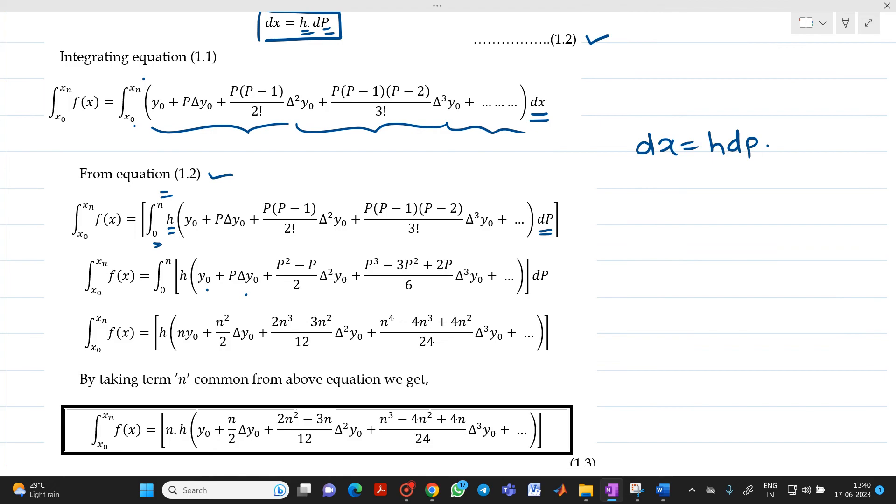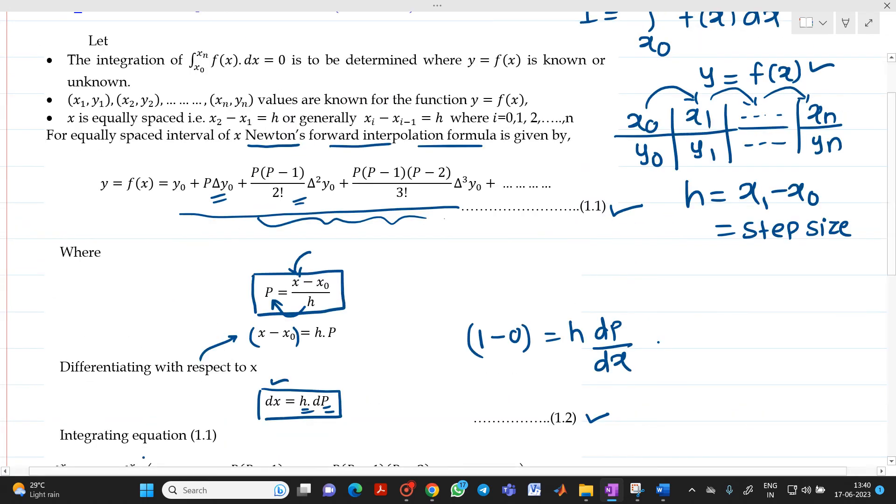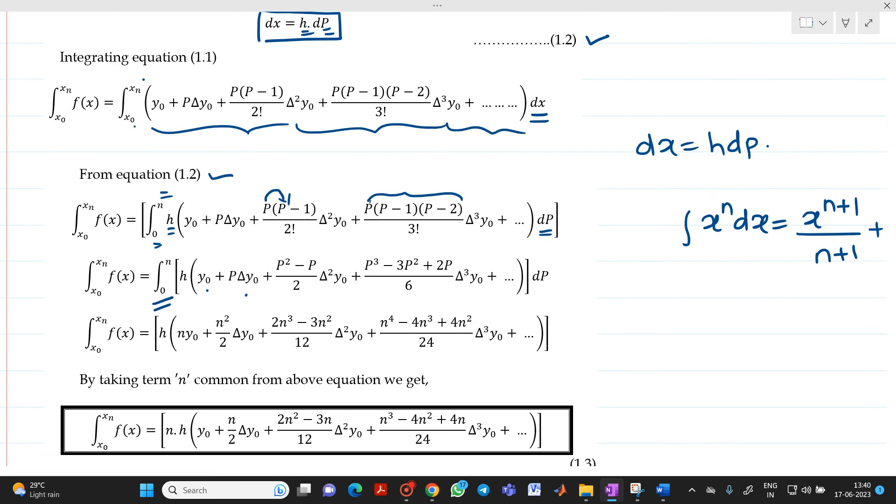We will multiply p inside. We will get p square minus p upon 2. If you do multiplication of these brackets, p cube minus 3p square plus 2p, 3 factorial is divided by 6. Let us apply integration inside. We know the standard formula: integration x raise to n dx will be equal to x raise to n plus 1 upon n plus 1 plus some constant value.